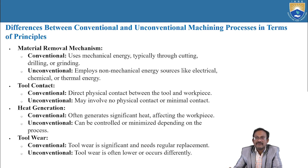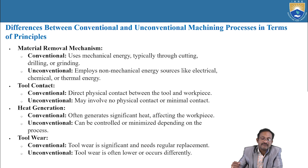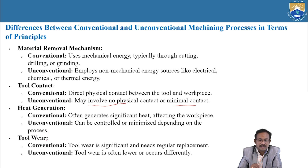Differences between conventional and unconventional machining process in terms of principles. Material removal mechanism: conventional uses mechanical energy, typically through cutting, drilling, and grinding; unconventional employs non-mechanical energy sources like electrical, chemical, or thermal energy. Tool contact: in conventional there is direct physical contact between the tool and the workpiece; in unconventional there may be no physical contact or minimal contact. Heat generation: conventional often generates significant heat affecting the workpiece; in unconventional, heat can be controlled or minimized depending on the process by using a dielectric fluid medium.